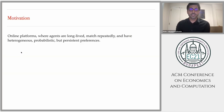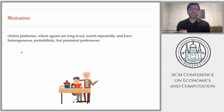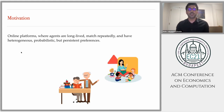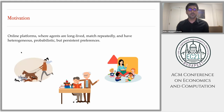In today's presentation, we'll be talking about online platforms where agents are long-lived, match repeatedly, and have heterogeneous, probabilistic, but persistent preferences. Examples of such platforms are matching PhD students to their advisors, matching kids to child care or nannies, or matching dogs to dog walkers.